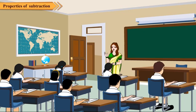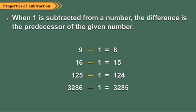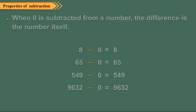Children, now I will tell you some properties of subtraction. These properties can help you to subtract quickly and correctly. Always remember these properties: When 1 is subtracted from a number, the difference is the predecessor of the given number. When 0 is subtracted from a number, the difference is the number itself. When a number is subtracted from itself, the difference obtained is zero.